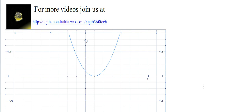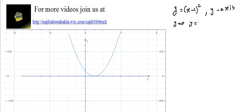Part 4: areas — finding area using integration method. We have the function y equal (x minus 1) to the power 2. We need the area between this curve and the y-axis, from y equal 0 to y equal 2.